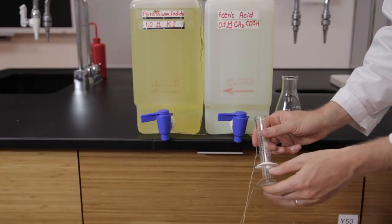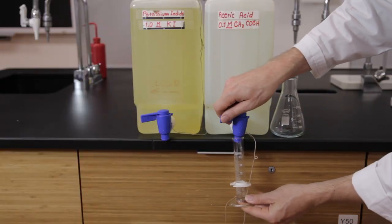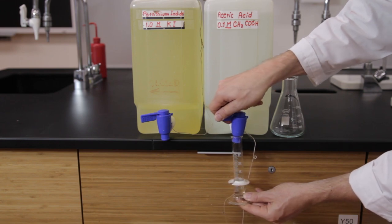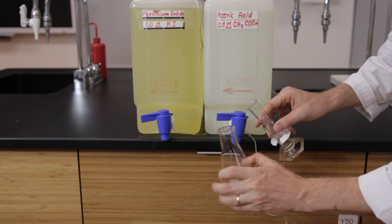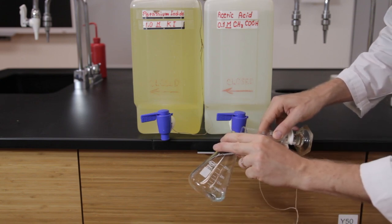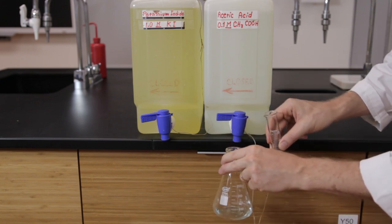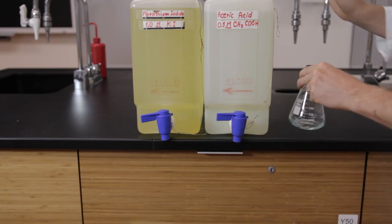To the same Erlenmeyer flask, add about 20 milliliters of potassium iodide solution and about 10 milliliters of the acetic acid solution. The order of addition does not matter. A white precipitate will form and will stay throughout the entire titration.